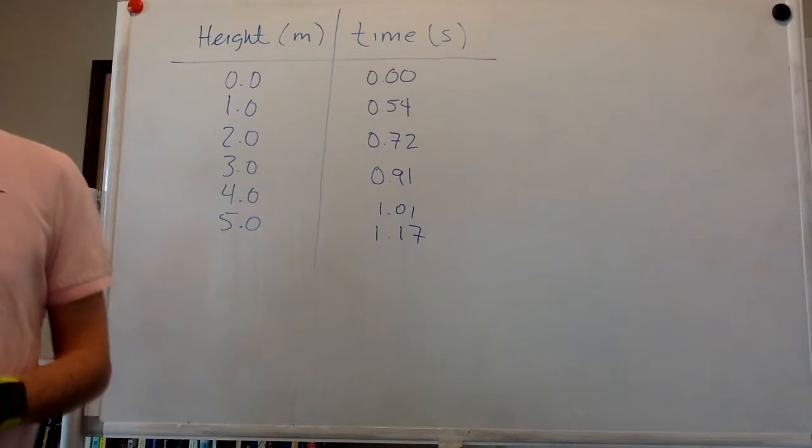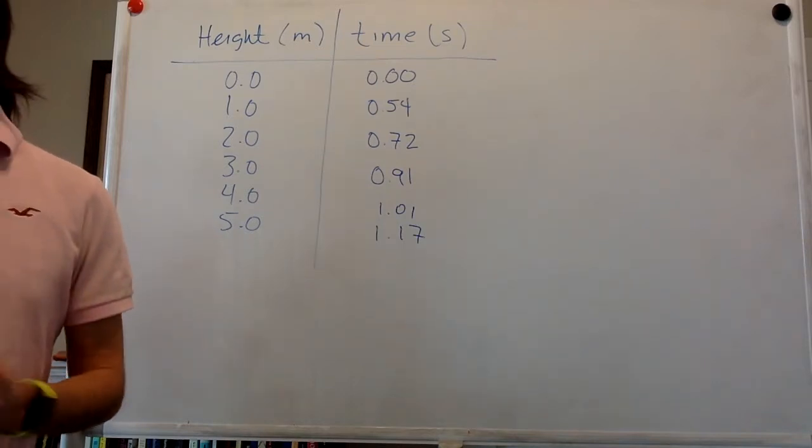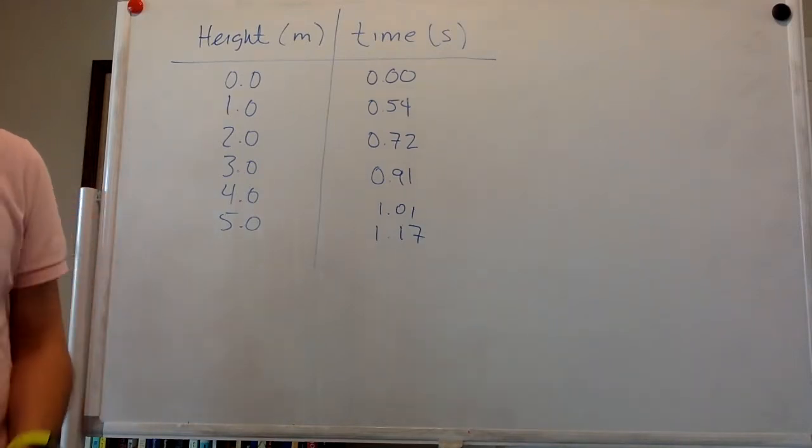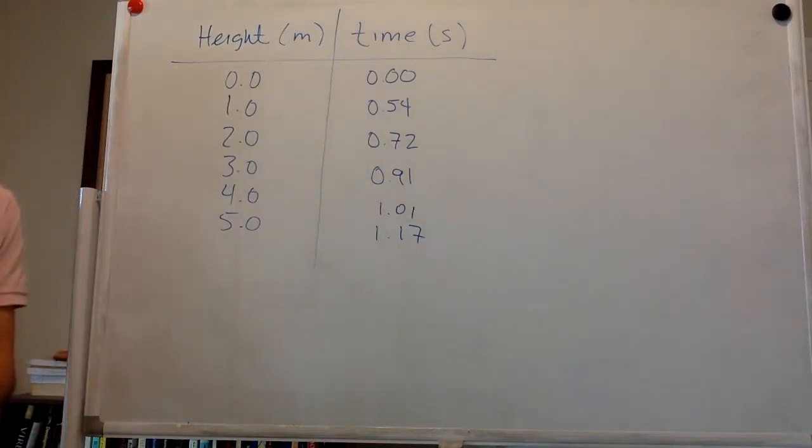As an astronaut visiting planet X, you're assigned to measure the free fall acceleration. Getting out your meter stick and stopwatch, you time the fall of a heavy ball from several heights. Your data are as follows.